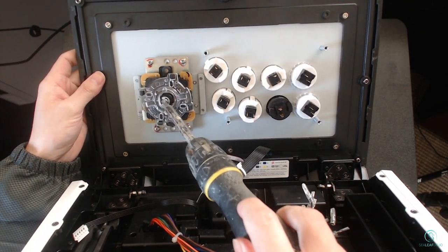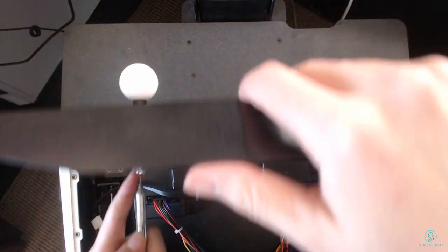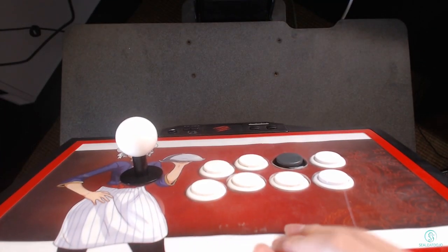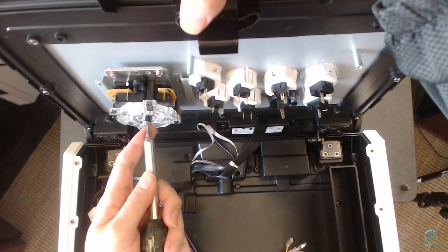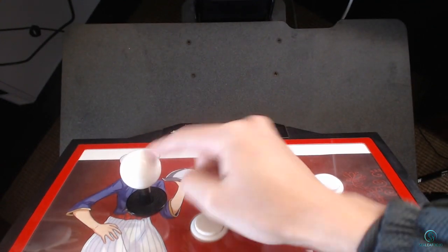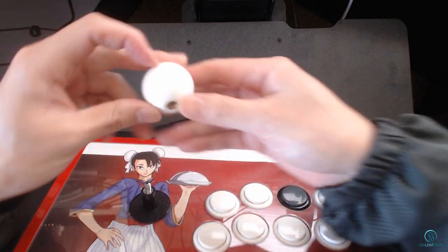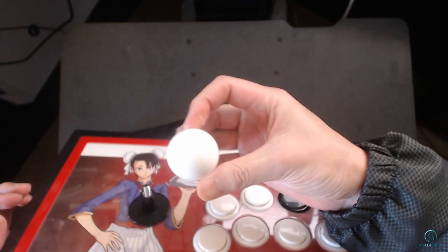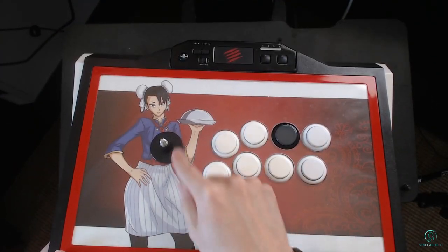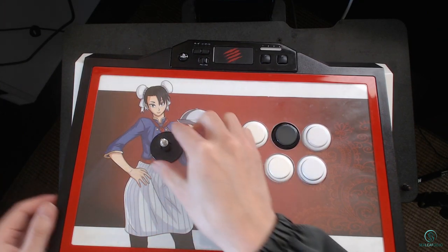Once they are disconnected, let's remove the stick and buttons from the faceplate. To remove the stick, we first need to remove the ball. This can be done by securing the shaft with a flat head screwdriver and unscrewing the ball. After the ball is removed, remove the shaft and hole cover. Then remove the base by unscrewing four screws.